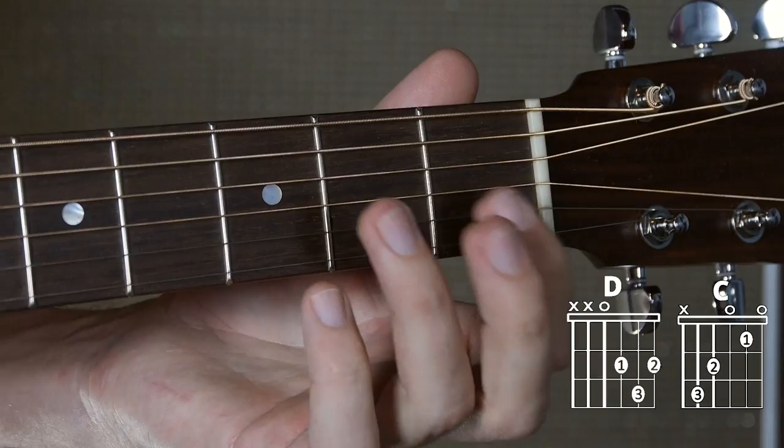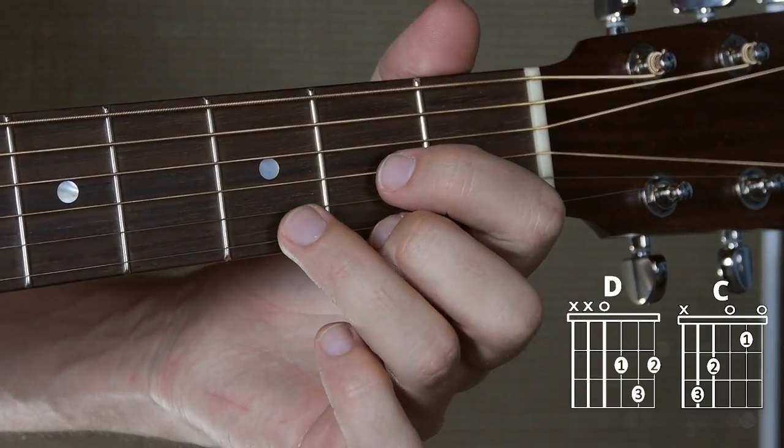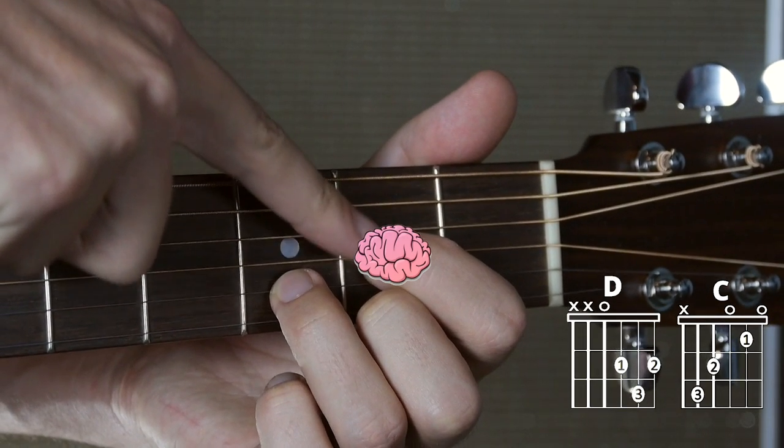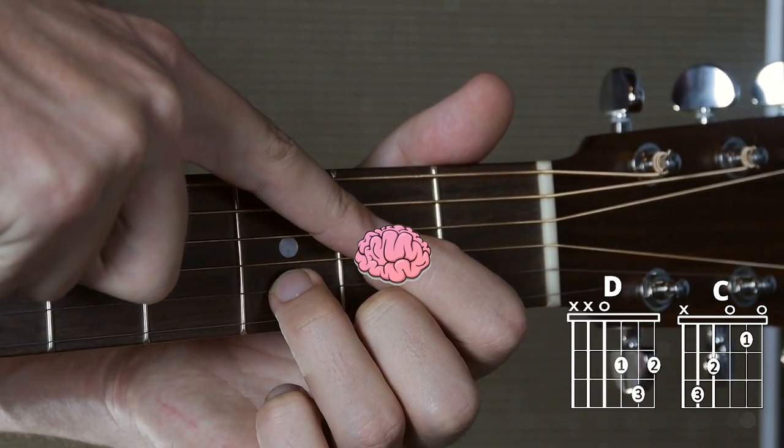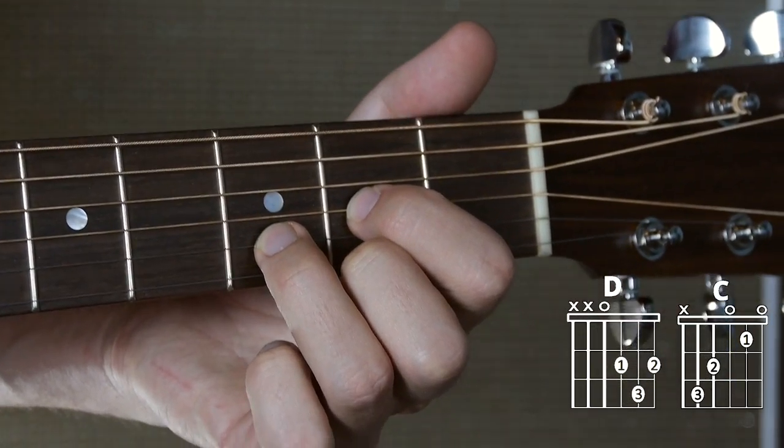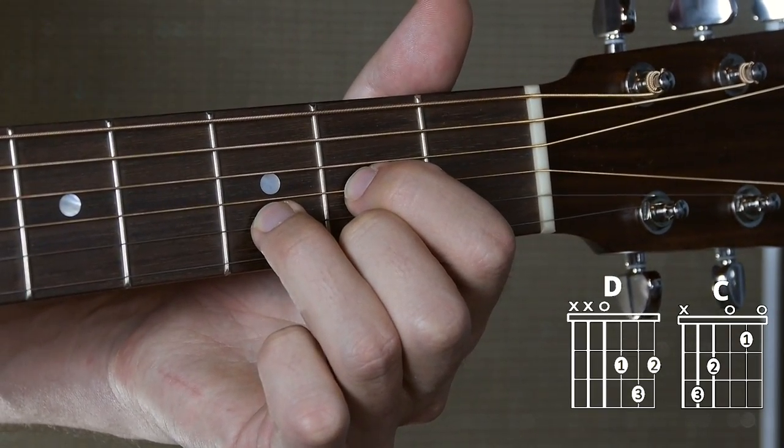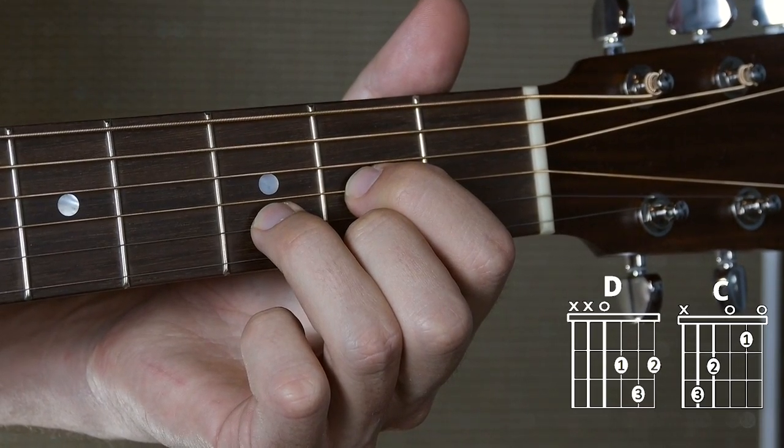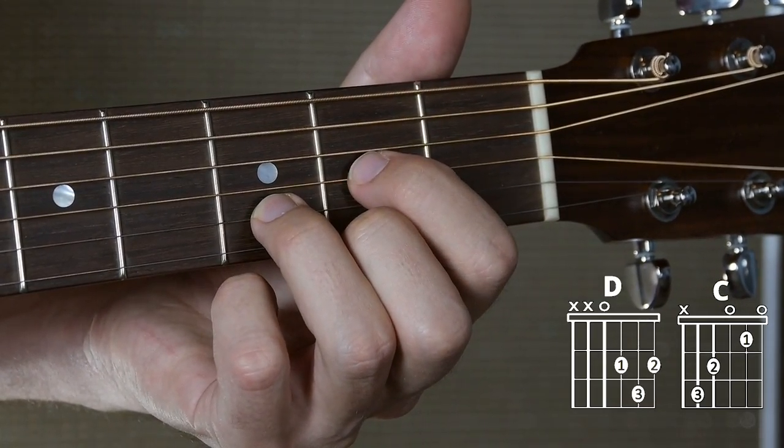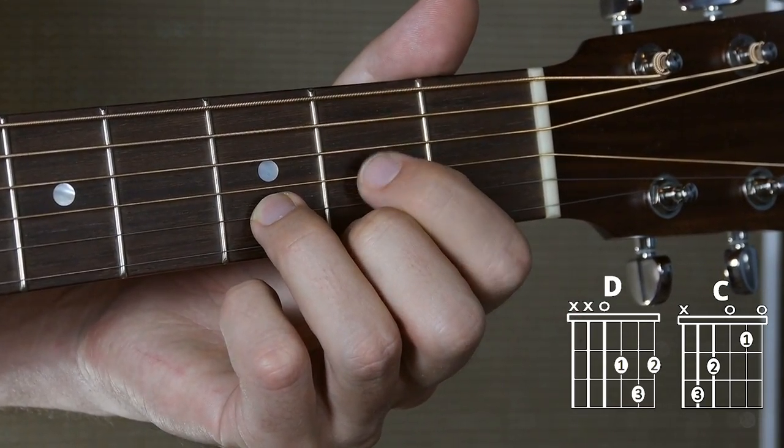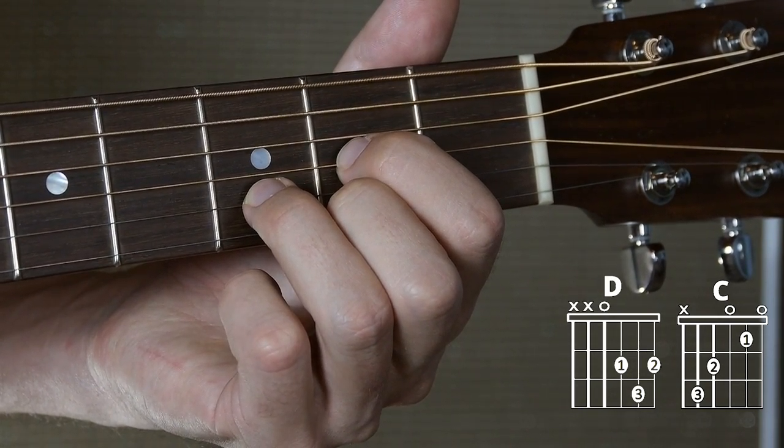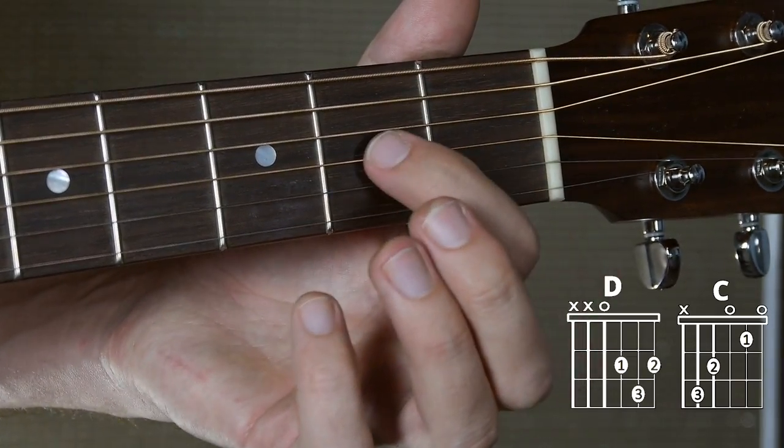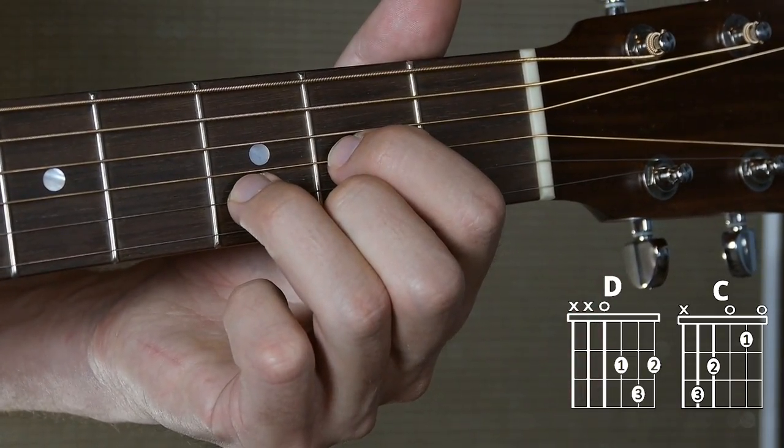So with the brain game, first we're gonna start on the D, and we're gonna put all our attention inside this first finger. So we're gonna put our brain inside that first finger. Now, before I even start, I'm gonna visualize in my head where this finger has to go. It's gonna go from the second fret of the third string to the first fret of the second string. So it's just gonna go from here to here. So I'm visualizing that.